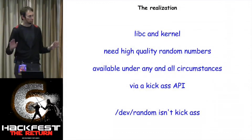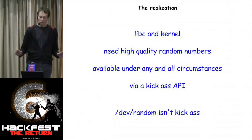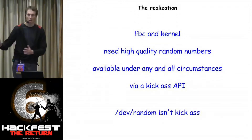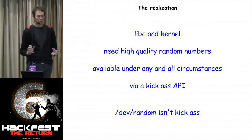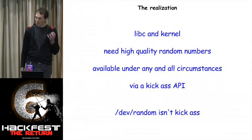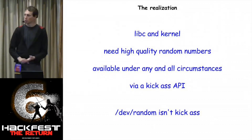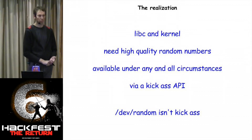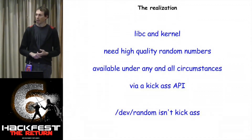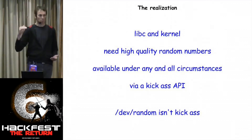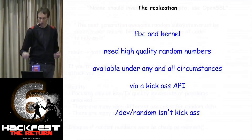The base realization is this: the library and the kernel need random numbers that you can call anywhere — down low, up high, wherever you want. You should be able to get these numbers and /dev/random is not a kick-ass API. You can't use that API in so many places. It makes your code more fragile, and because it requires a large block of code to use it, developers just don't use it at all — so random numbers are not pushed into applications as they should be.